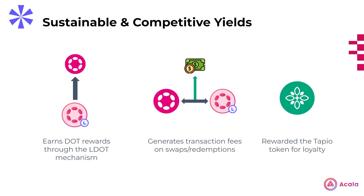Secondly, being that TDOT's foremost utility is that it facilitates swaps between DOT and LDOT, the fees that are being generated are wholly paid back to the liquidity providers, thus increasing the overall yield. As a result, with just these two sources of income, the overall pool is very sustainable and isn't reliant on minting tokens in an inflationary fashion, which is often the go-to method of bootstrapping these sorts of programs.